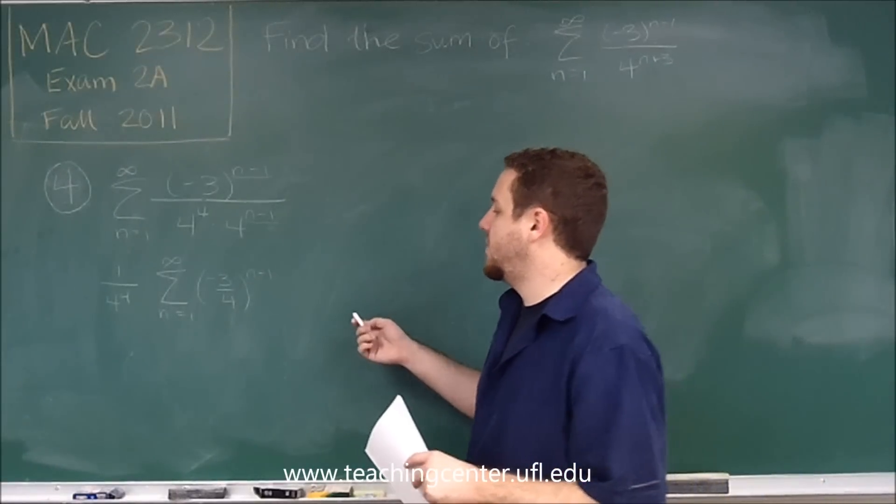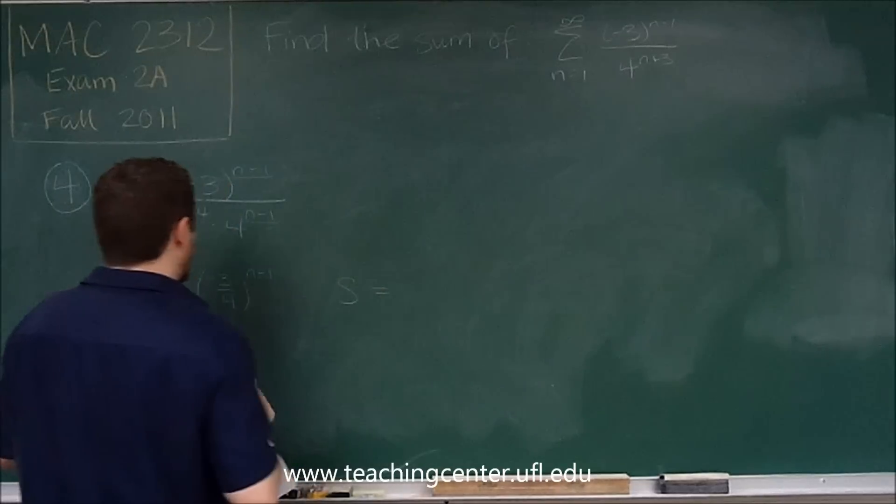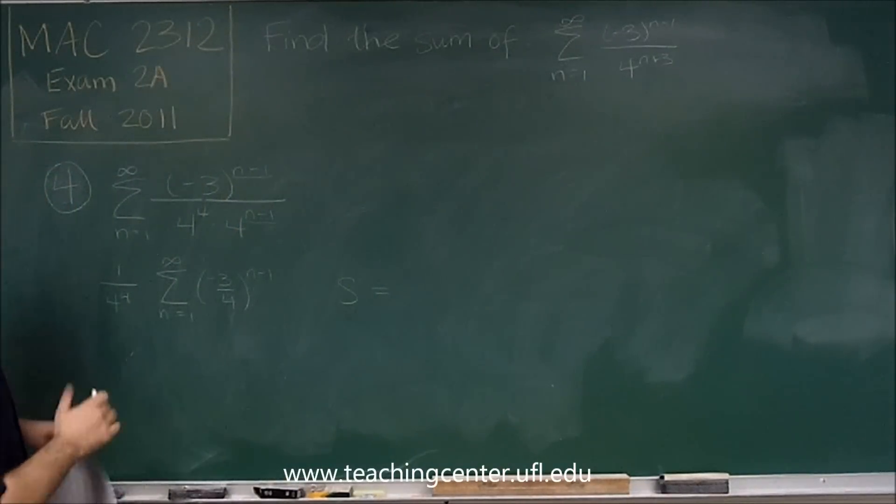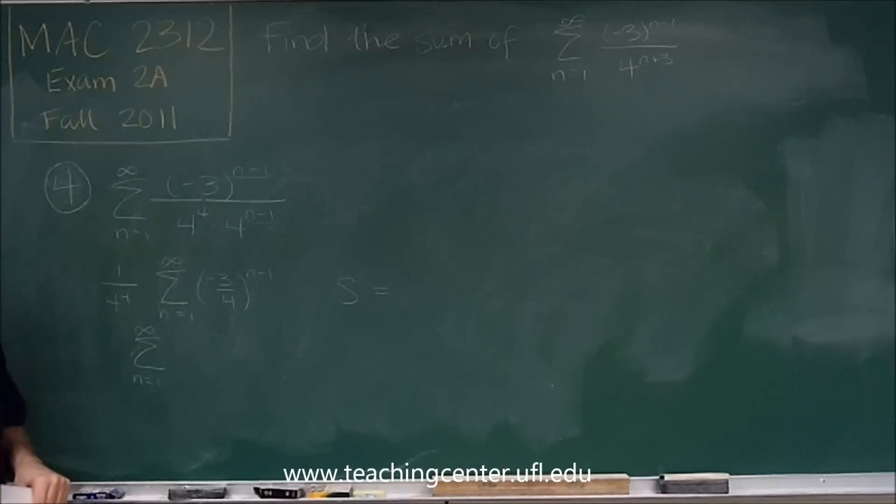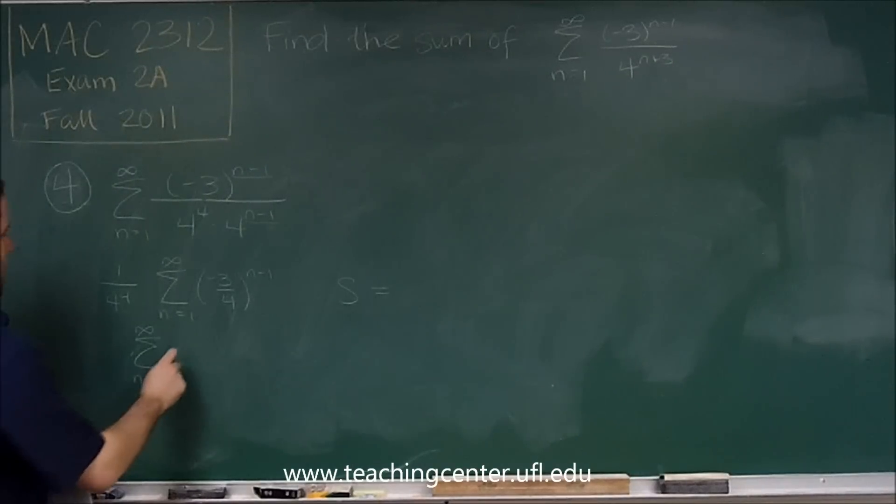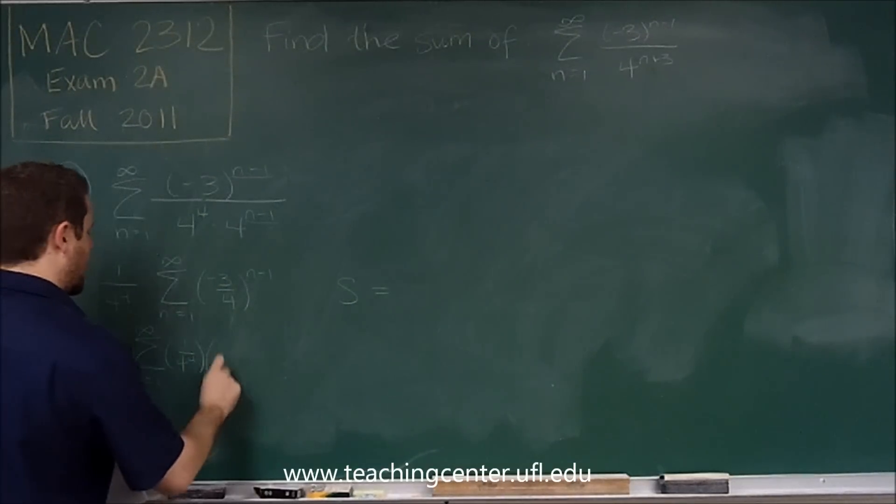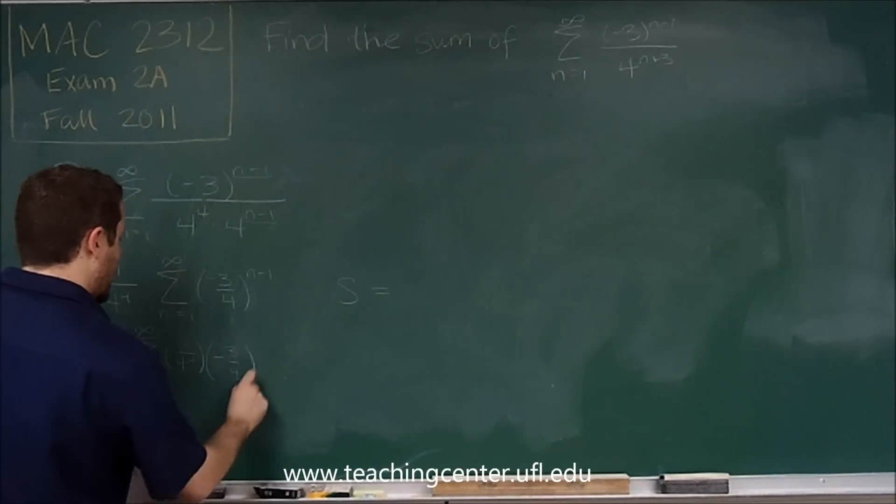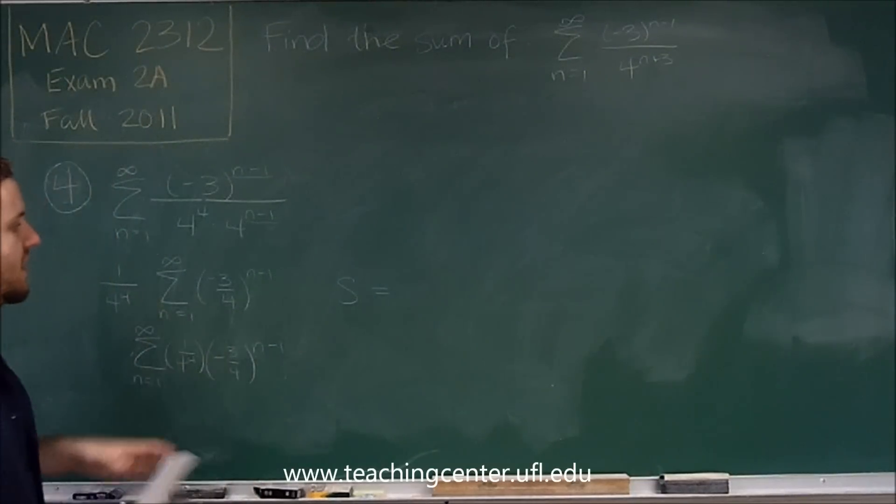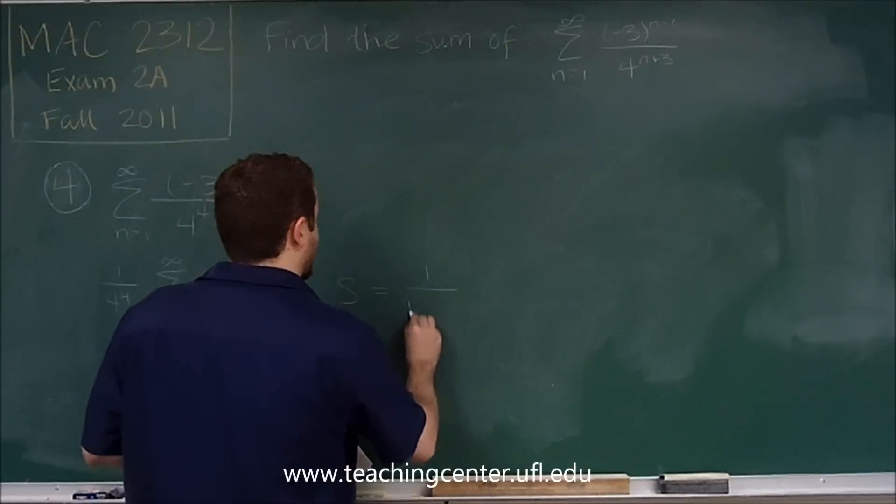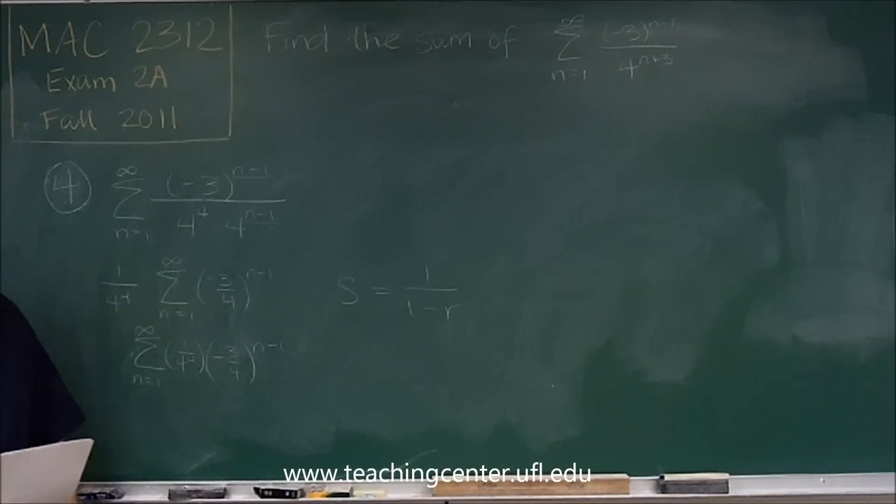So when we take the sum of this, remember that your geometric series formula is that the sum is equal to... or actually, let me rewrite this in one more way, just in case this is the way of writing the formula that you are most familiar with. If we could have one over four to the four as our a, it's the same thing, but in either case, so the sum of a geometric series is one over one minus r, where r is the number that's in the power.